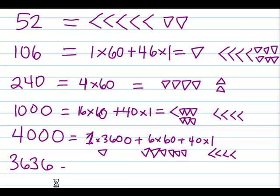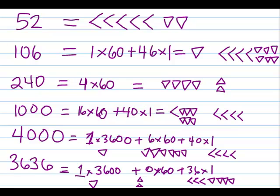3,636 is going to be 1 in the 3600s place, no 60s, and 36 in the 1s place. So, a 1 in the 3600s place, I'll leave a space to show I'm going to the 60s place value. There's none, so I put a placeholder. Leave a space to show I'm going to the 1s place value. 3 tens, 6 ones.